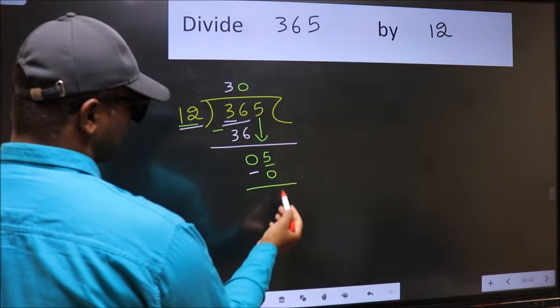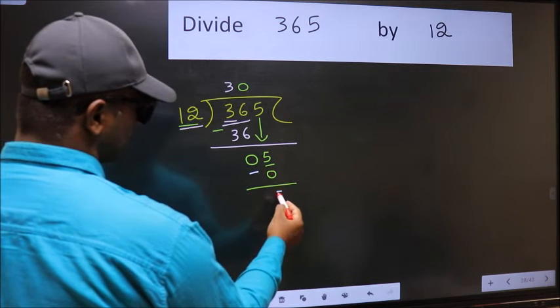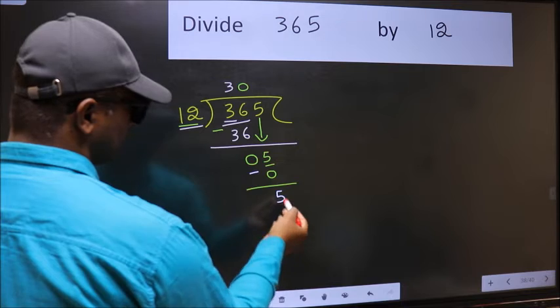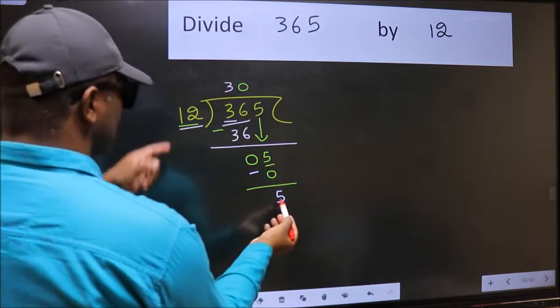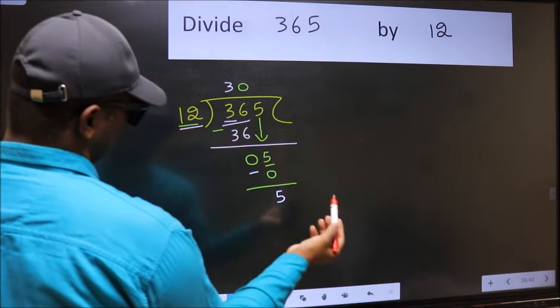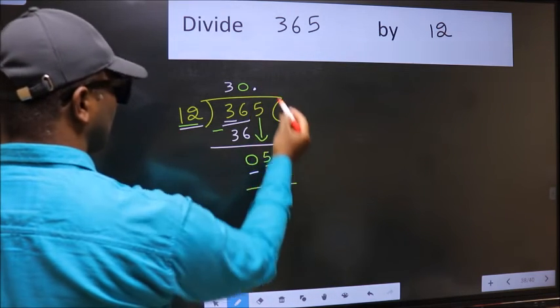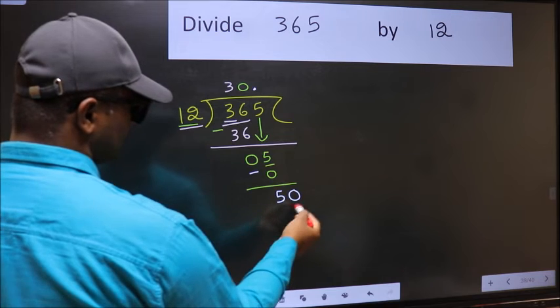Now you should subtract. 5 minus 0, 5. Over here, we did not bring any number down. And 5 is smaller than 12, so now you can put dot and take 0. So 50.